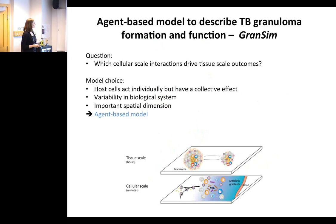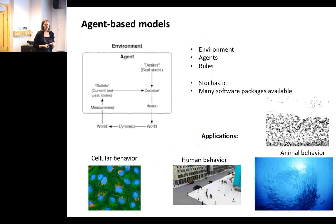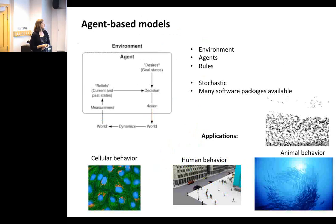A brief overview of agent-based models: they typically have three components — environment, agents, and rules. Agents are individual computational entities whose rules are based on their individual desires and beliefs, defined by the system you're studying. Agents interact with the environment and make decisions about actions to take, often using probabilities and random number generators. There are many software packages available, like NetLogo, which provide the structure for building these models. They have applications in animal behavior, human behavior, and cellular behavior.